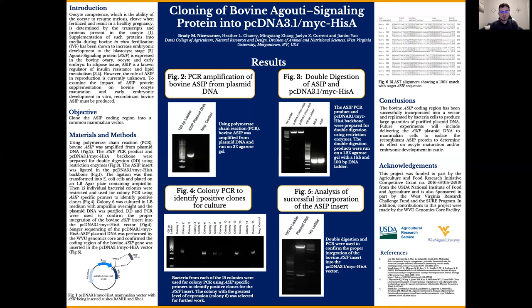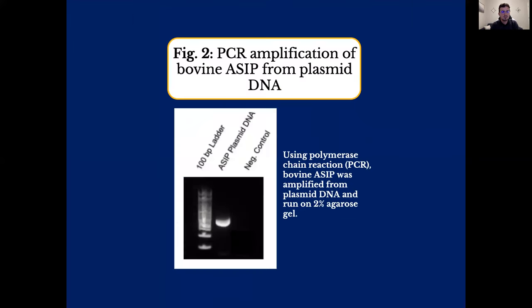The methods used started by using polymerase chain reaction, or PCR, to amplify bovine ASIP from plasmid DNA. The products were then run on a gel, as seen here in figure two. The ASIP insert is about 400 base pairs, so it always shows up right around that fourth bar on the 100 base pair ladder.